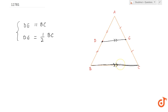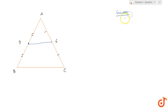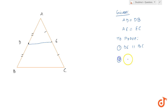So DE is half of BC. Now how do we prove it? Let's start with what is given. We have triangle ABC. Point D is on side AB such that AD is equal to DB, and point E is on side AC such that AE is equal to EC. What do I need to prove? I need to prove that DE is parallel to BC — that's the first part — and second, I need to show that DE is half of BC.